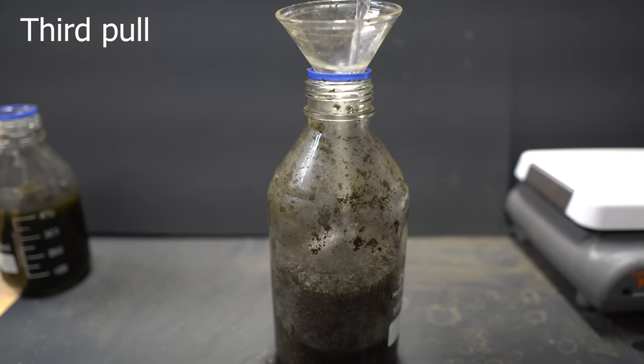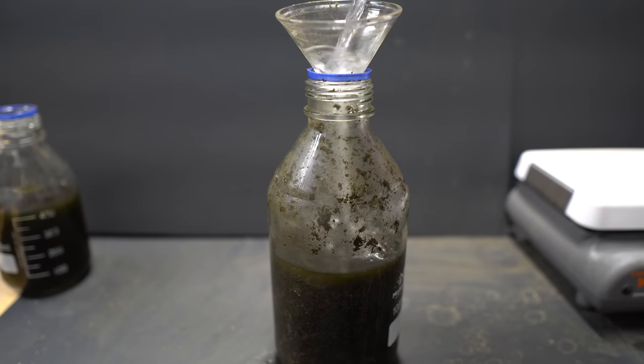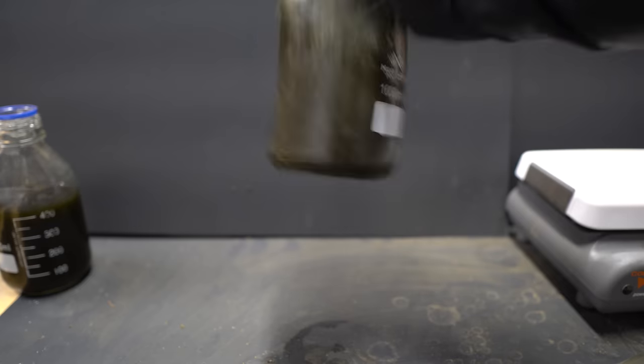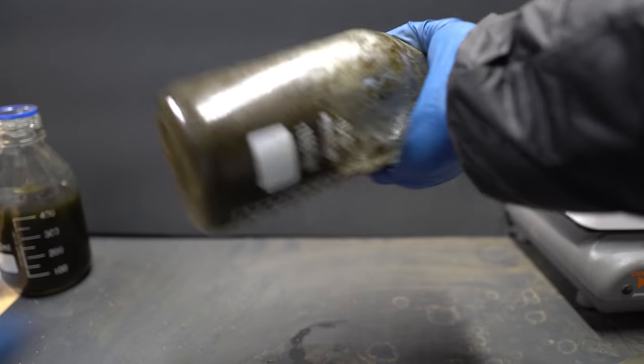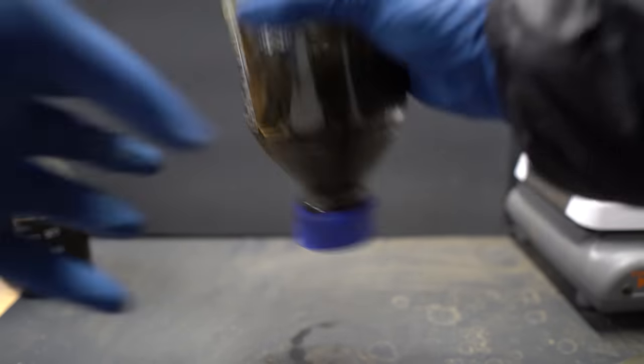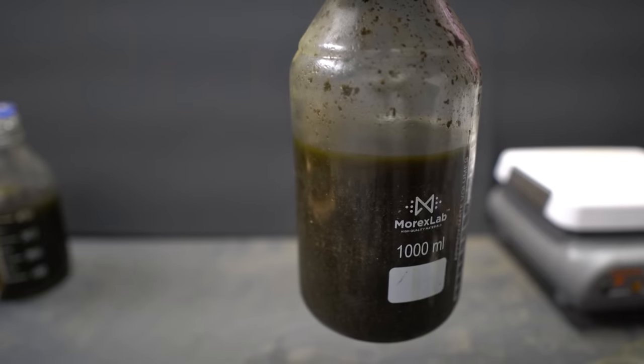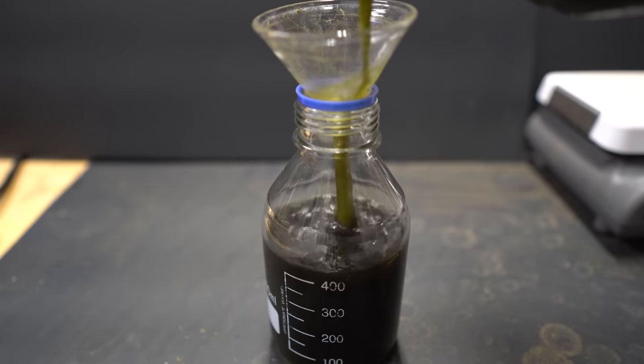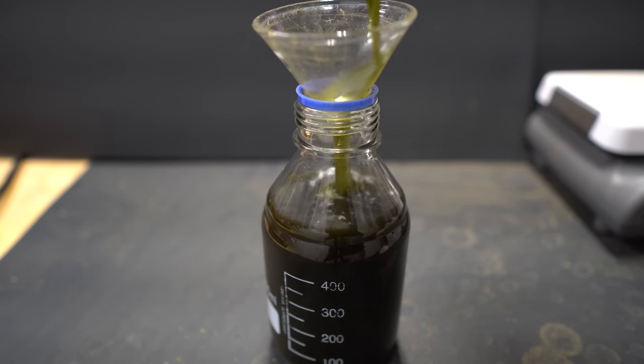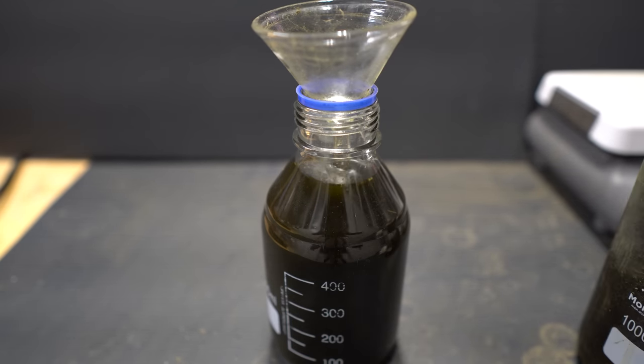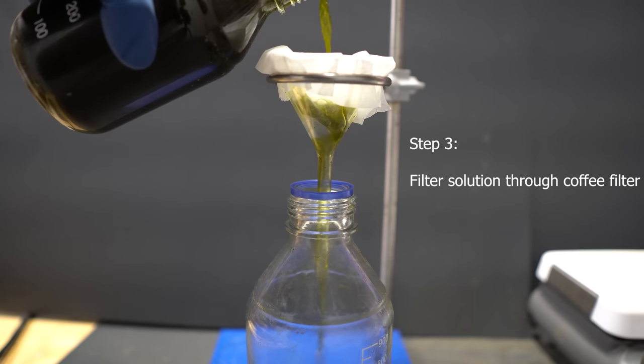We then decant all of the acetone that we can using the cap as a blockage so not a lot of plant material gets in. Overall for the three pulls I used about a liter of acetone, however I would go a little bit above that. As I was doing the three pulls I really should have put on another pair of gloves as my hands got extremely cold.